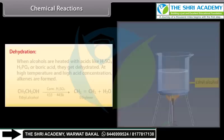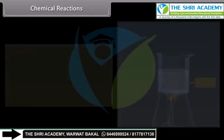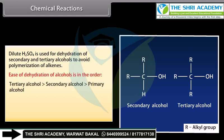Dehydration: When alcohols are heated with acids like sulfuric acid, phosphoric acid or boric acid, they get dehydrated. At high temperature and high acid concentration, alkenes are formed. Dilute sulfuric acid is used for dehydration of secondary and tertiary alcohols to avoid polymerization of alkenes. Ease of dehydration of alcohols is in the order: tertiary alcohol followed by secondary alcohol and then primary alcohol.